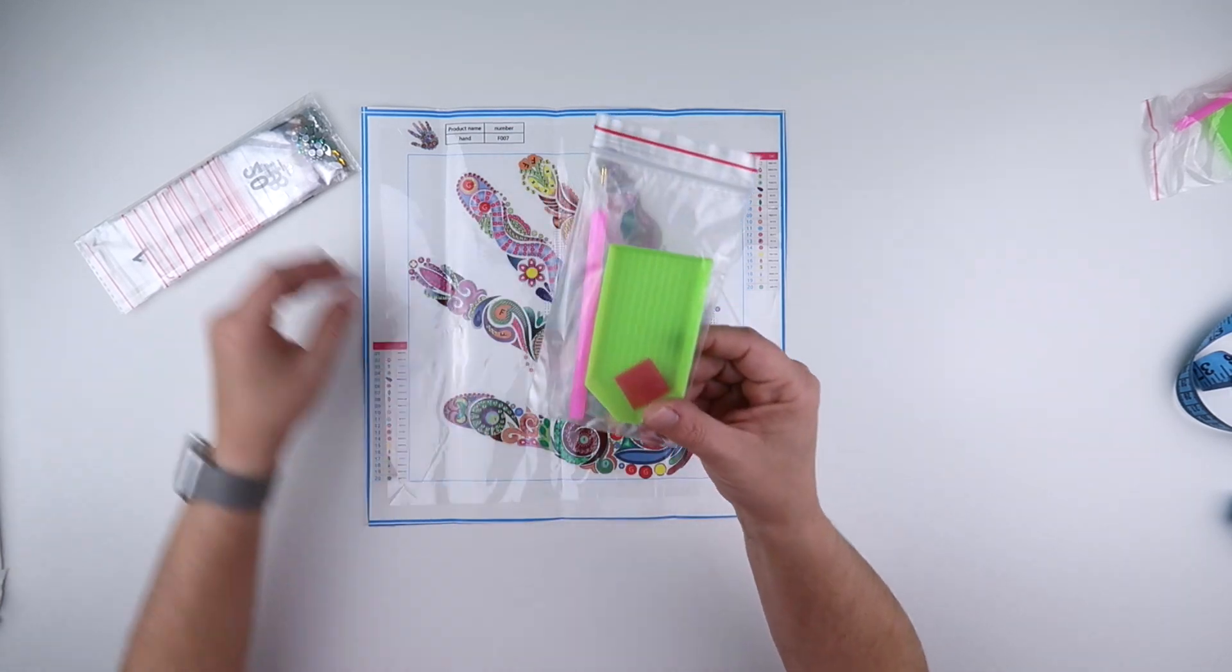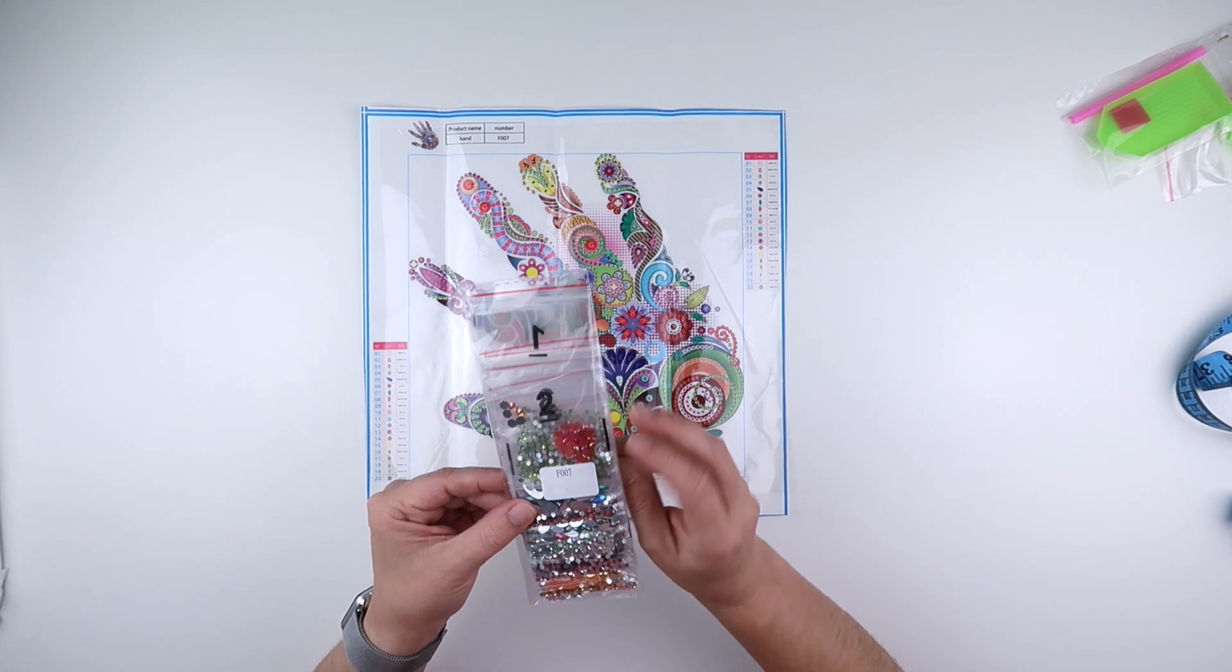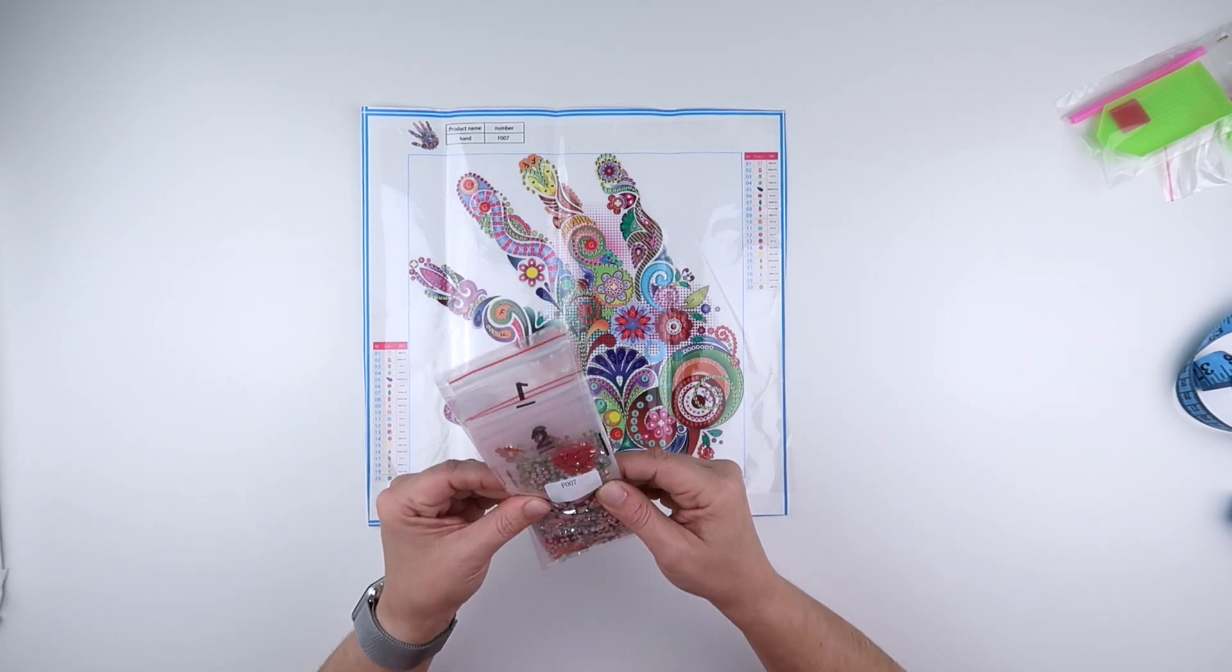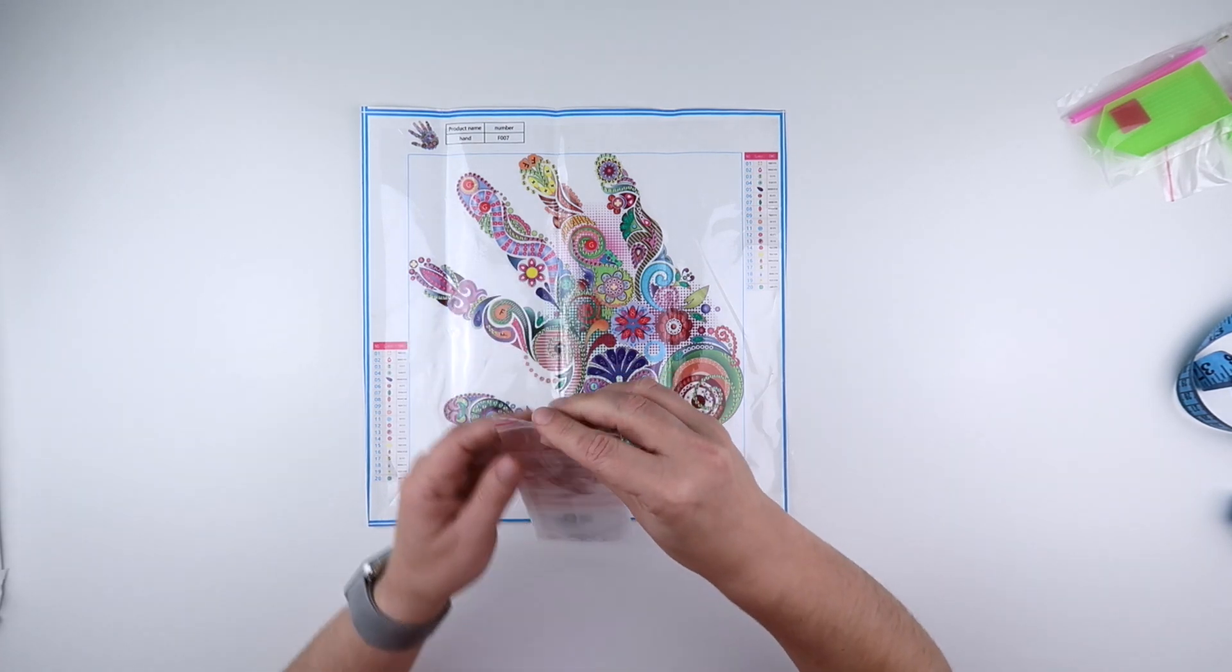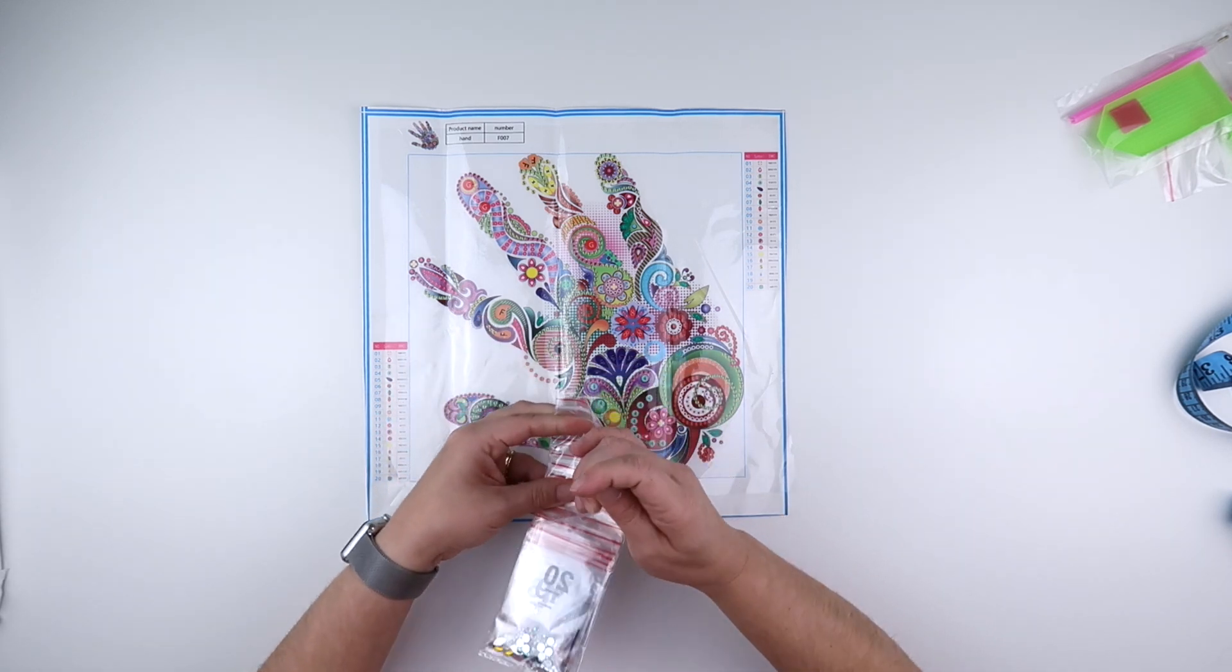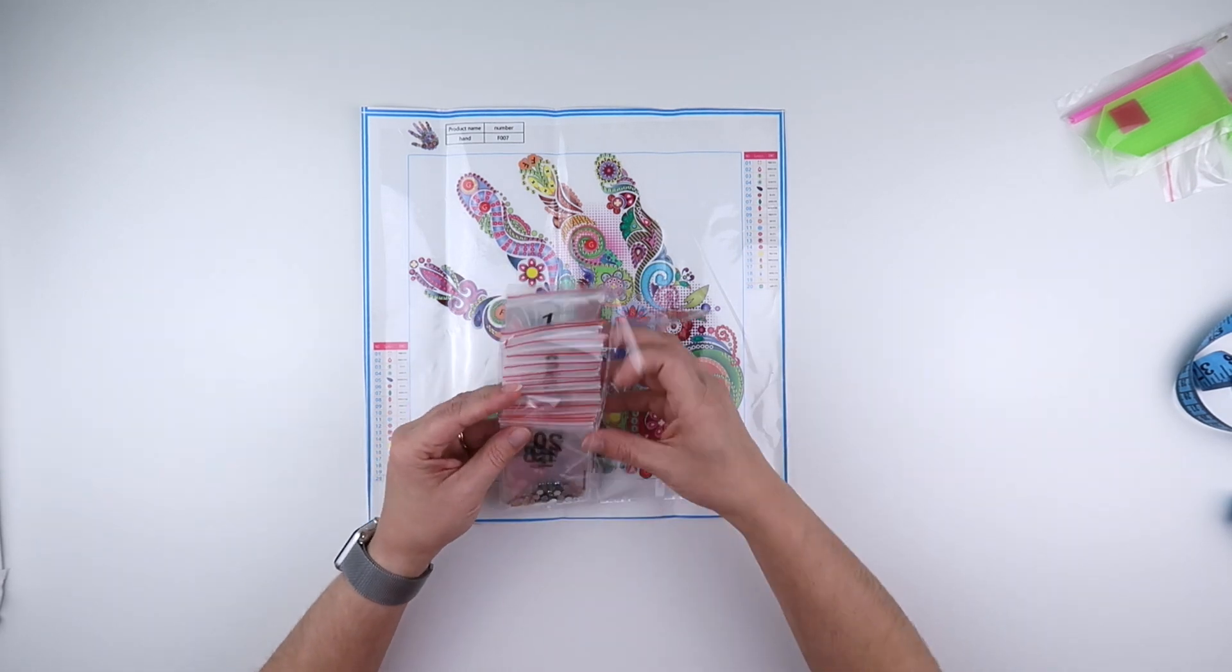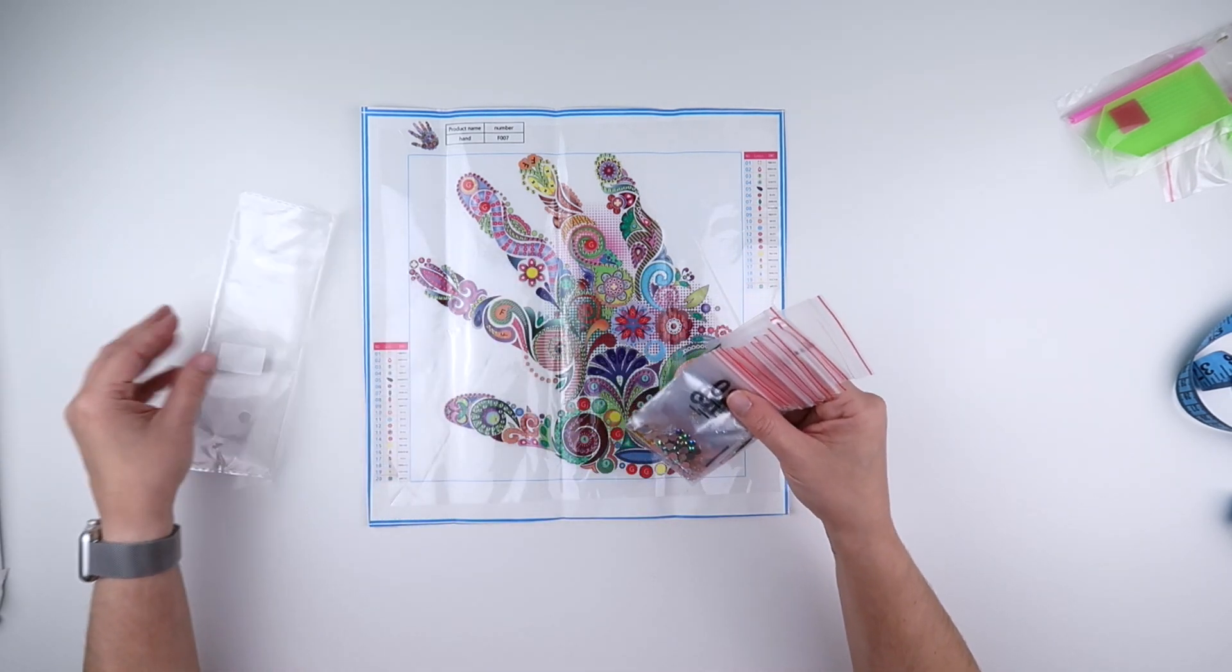We get a basic toolkit, no tweezers with this one. And it does all come in baggies. But because it is special shapes, I am going to get them out and show you some of the different ones that you're getting with this. They are numbered from 1 to 20.